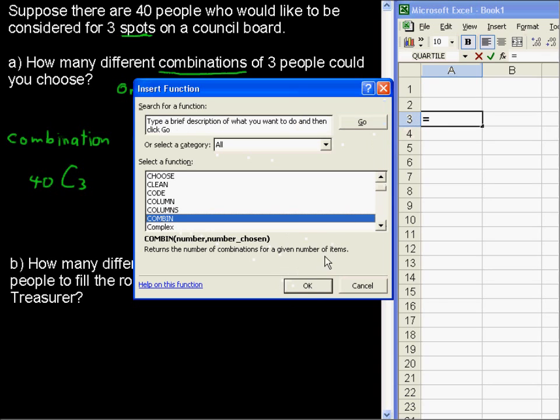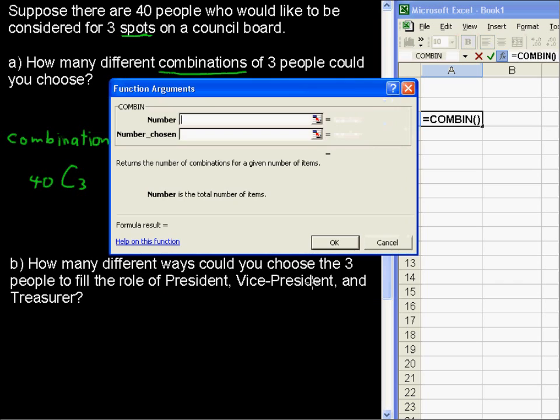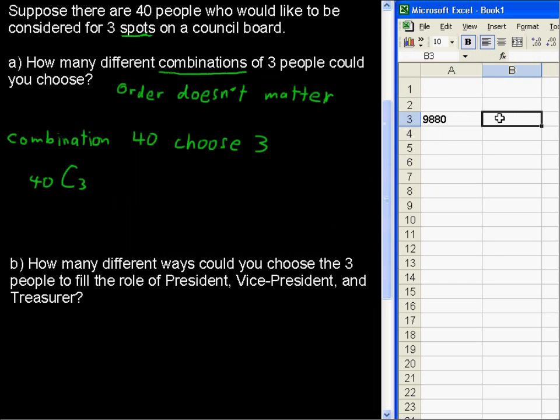And then when you go to enter the function like that, it walks you through it. The number, we have forty, and I'm just typing this in, forty. Forty different people, and the number chosen is three. So, we get 9,880 combinations.